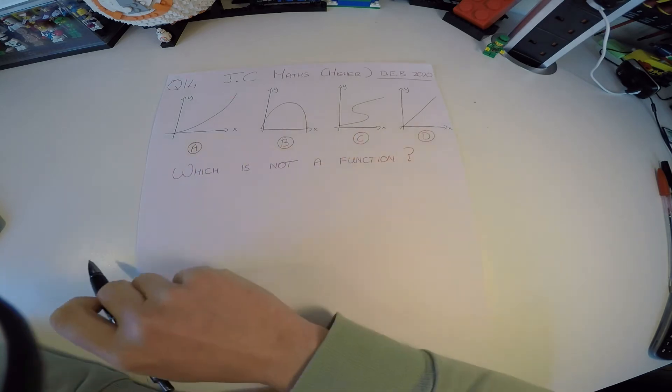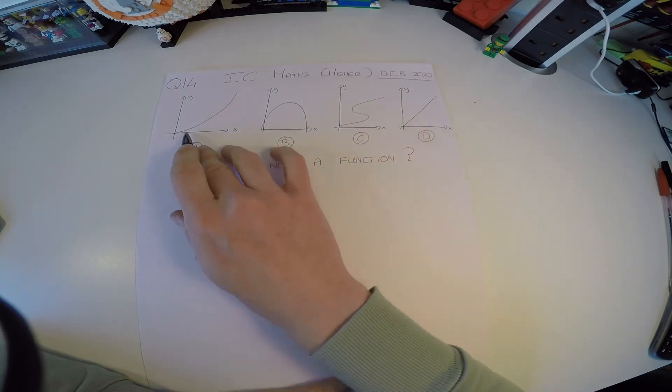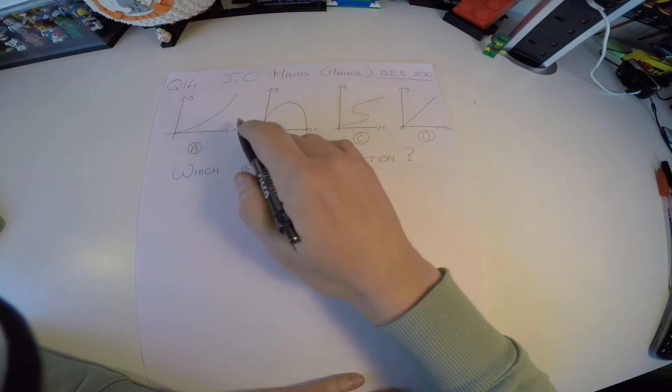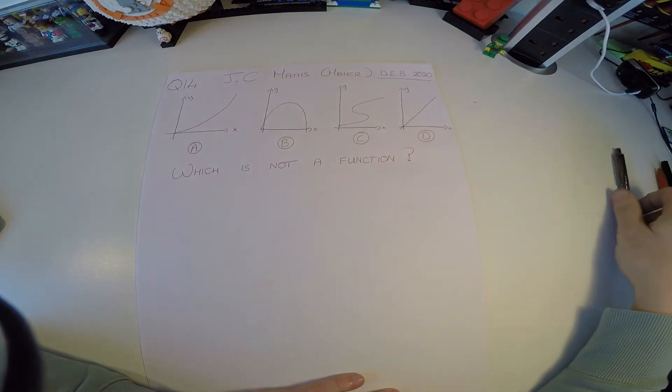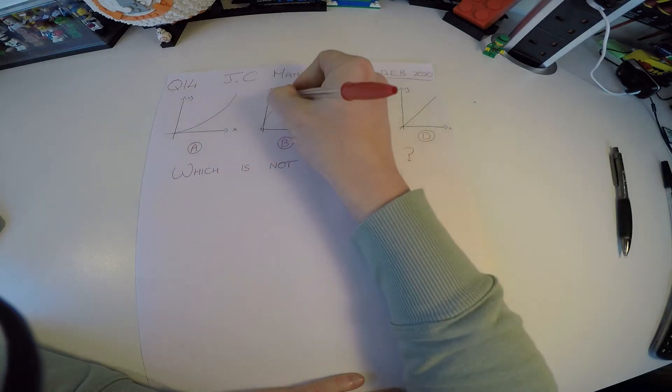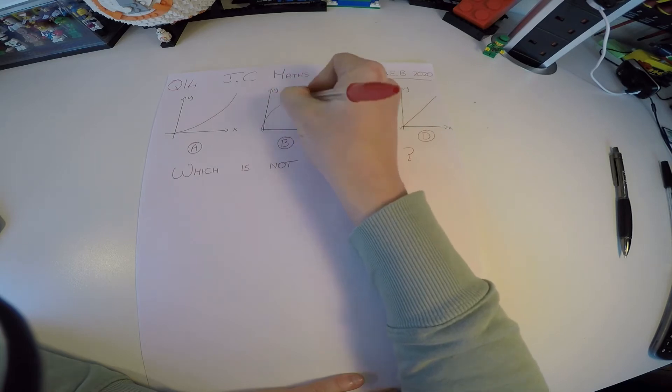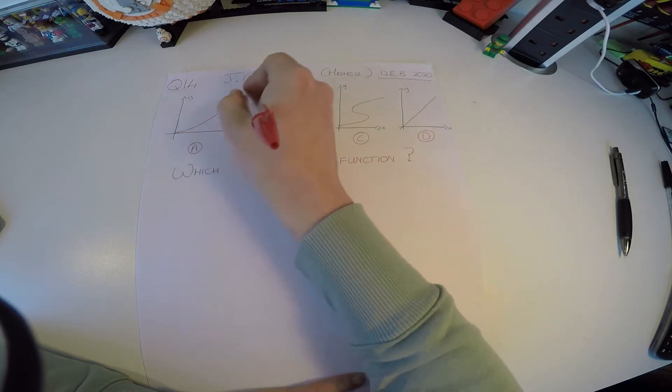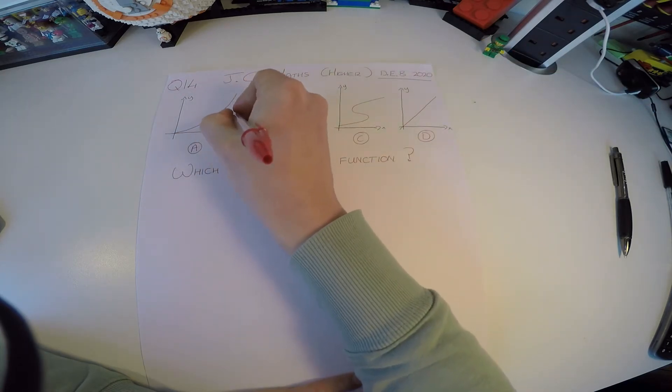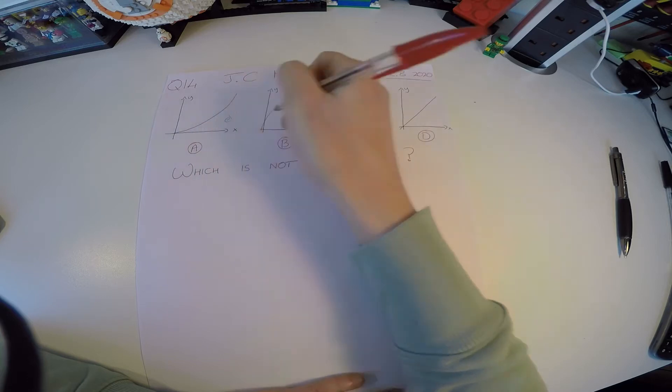So when we look at the four of these, we have a function that looks like an exponential case getting bigger. You may notice that this one here is a negative type x squared graph. This one is actually exponentially getting bigger. It's kind of e to the power or something, but you won't need to know that.